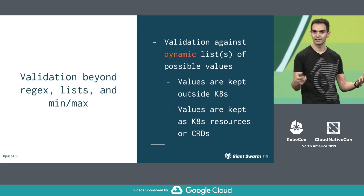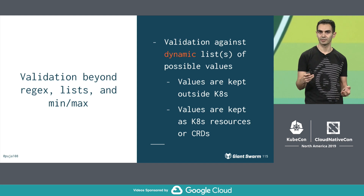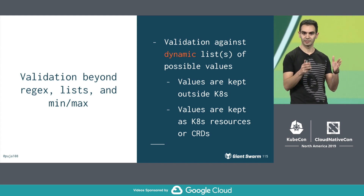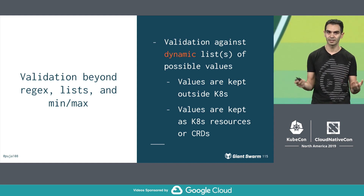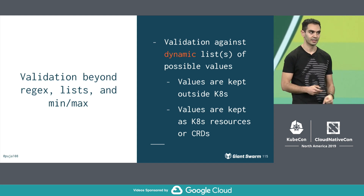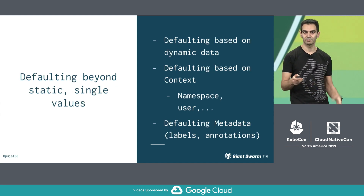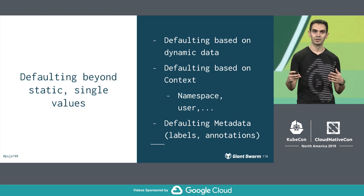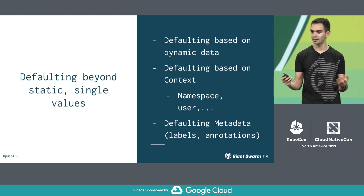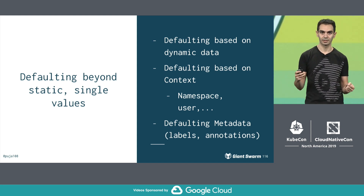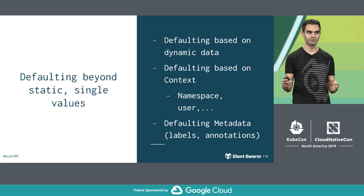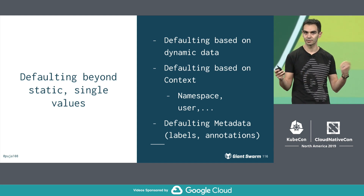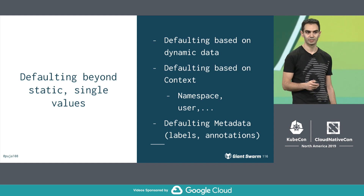One of the use cases is in validation once you go into dynamic values — values that cannot be declared just on creation of the CRD, but change over time or based on context, kept inside or outside of Kubernetes. In the defaulting area, it's pretty much the same: once you go into defaulting based on dynamic data, or based on context like namespaces and users, you will need an admission controller. And if you want to default metadata or labels because you have label selectors in your controller, you will need to use an admission controller too.